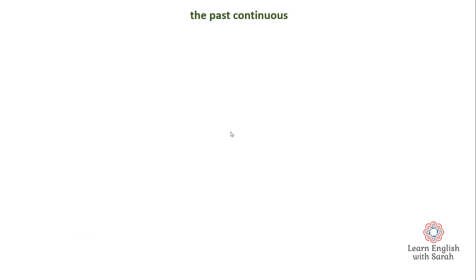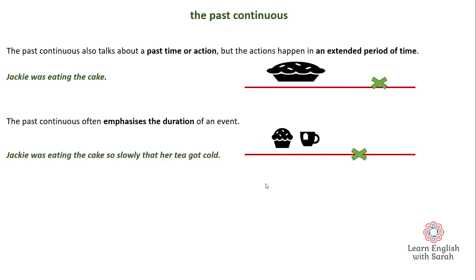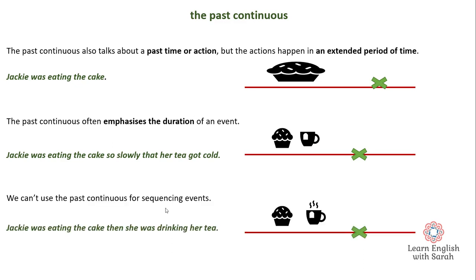Now let's look at the past continuous. The past continuous also talks about a past time or action, but these actions happen over an extended period of time. The cake in this slide is longer than before — that represents the extended period. So: 'Jackie was eating the cake.' The past continuous often emphasizes the duration of an event — duration meaning length of time. For example: 'Jackie was eating her cake so slowly that her tea got cold.' One important difference: we can't use the past continuous for sequencing events. You can't say 'Jackie was eating her cake, then she was drinking her tea' — it doesn't really work.